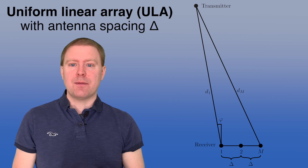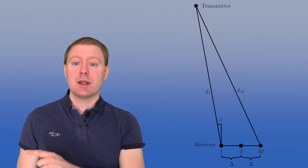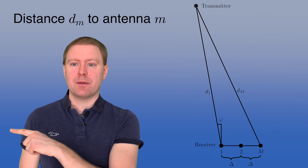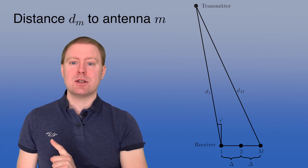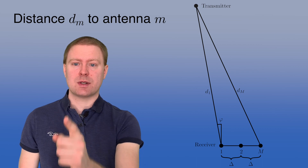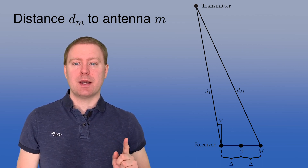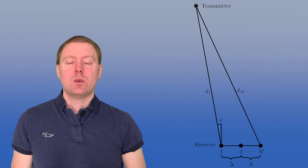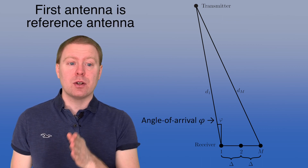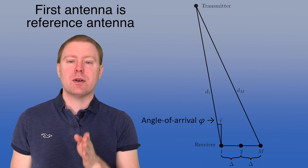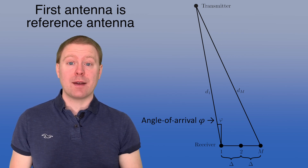We can define for every antenna a distance to the transmitter: d1 from the first receiver antenna, d2 from the second, and dM from the Mth antenna. We use the first antenna as a reference antenna and define phi as the angle to the transmitter from that receive antenna, also called the angle of arrival.